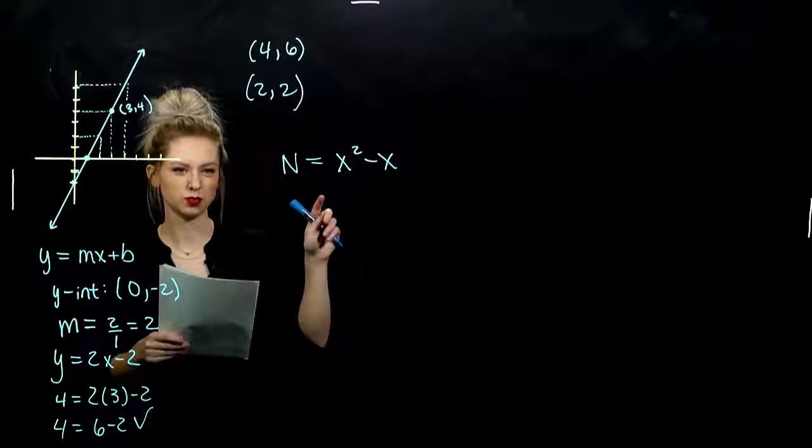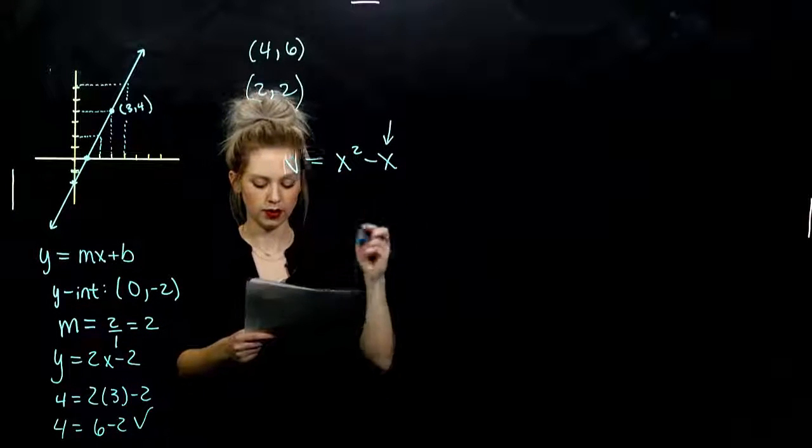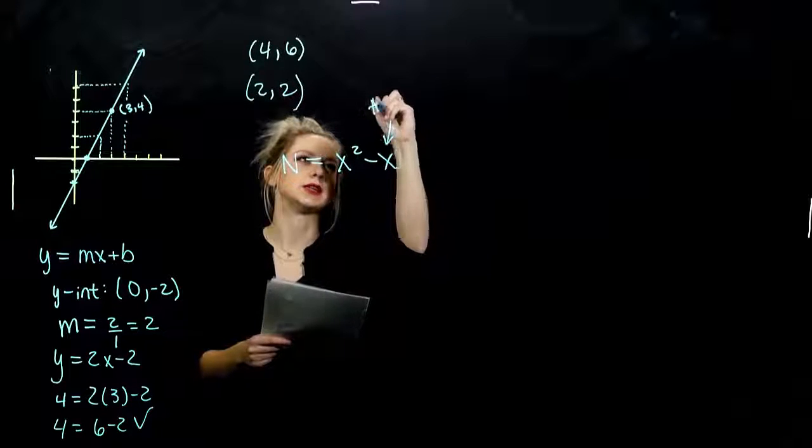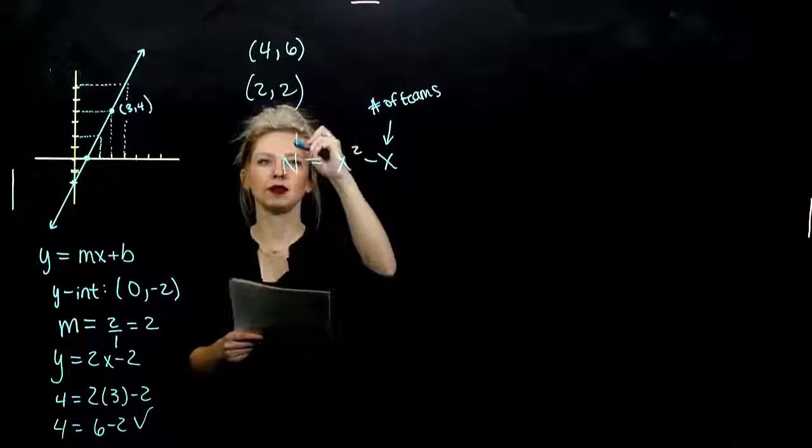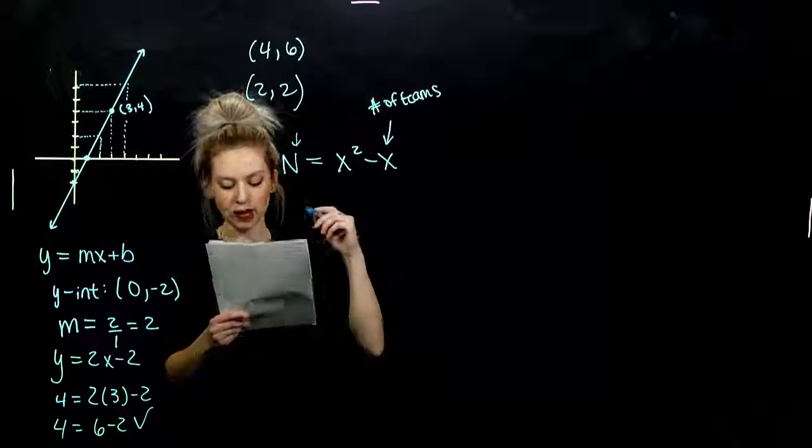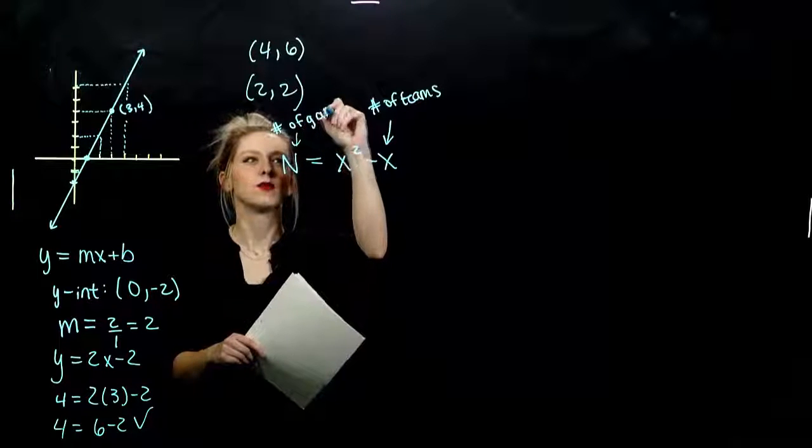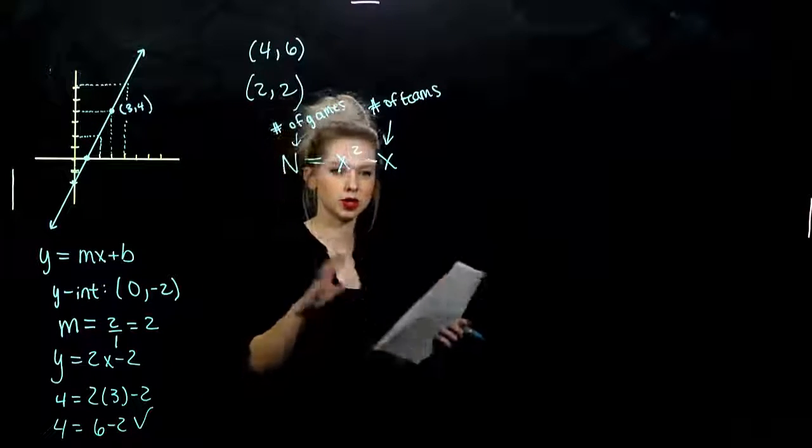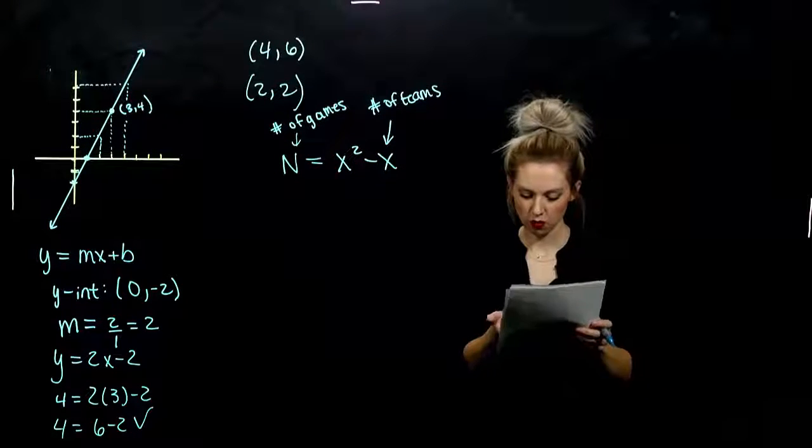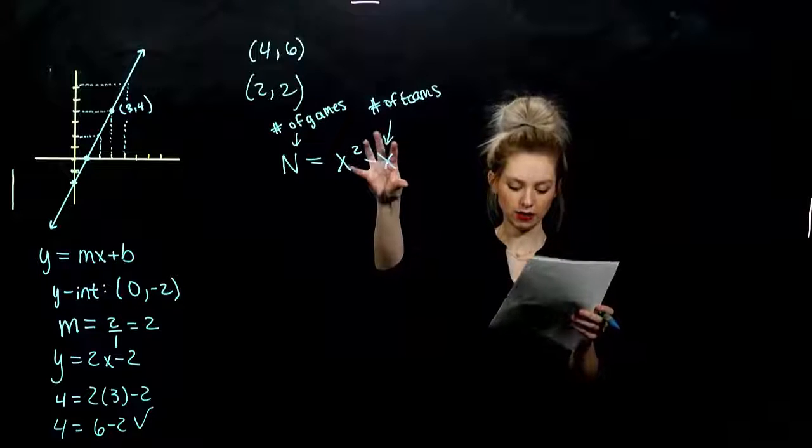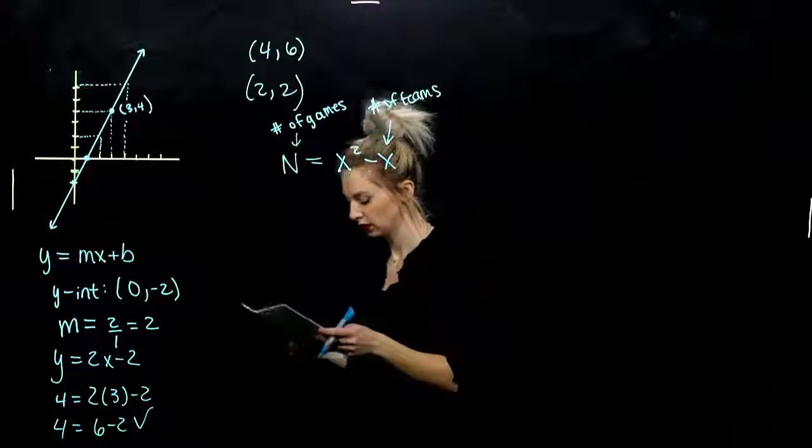So in our polynomial, let's just break down the pieces again. What did x represent? That variable talked about the number of teams. And then n, the output, was number of games to be played. So it's helpful to know which piece of information goes to which variable. Because, in this case, we have the number of teams. We have x. And we need to figure out n, the total number of games played. So we'll plug it in.